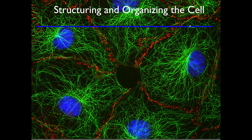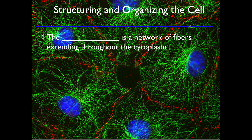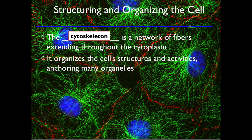Cells are not random blobs with things floating haphazardly — there is structure and organization. The set of proteins called the cytoskeleton handles that aspect. It's a network of fibers that extends through the cytoplasm, organizes the cell's structures and activities, anchors its organelles, and gives transport routes for things being moved within the cell. You can see it here as fluorescent green thread-like structures forming almost a highway system around the nucleus.